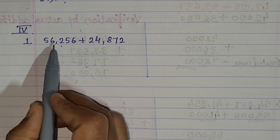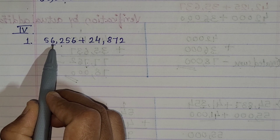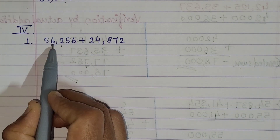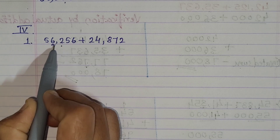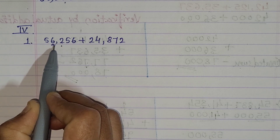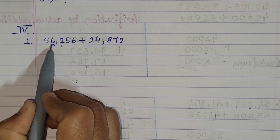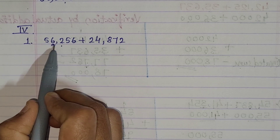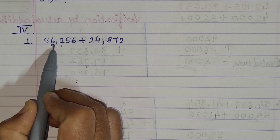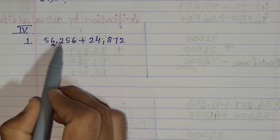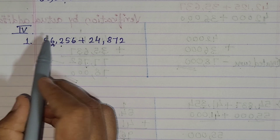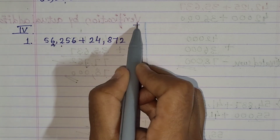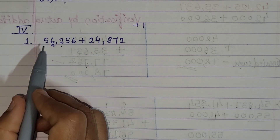If the digit at the thousand place is 1, 2, 3, or 4, then you have to replace the unit, ten, hundred, and thousand by zero. And if the digit at the thousand place is 5, 6, 7, 8, or 9, then you have to replace unit, ten, hundred, and thousand by zero and add plus one to the digit at the ten thousand place.